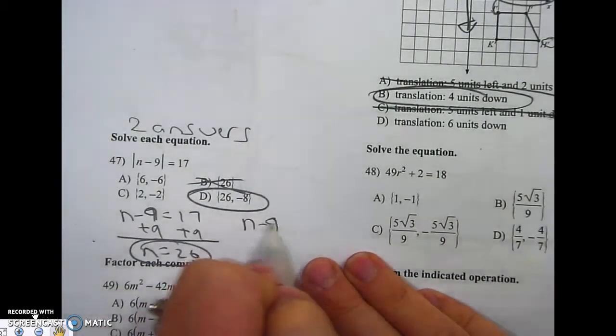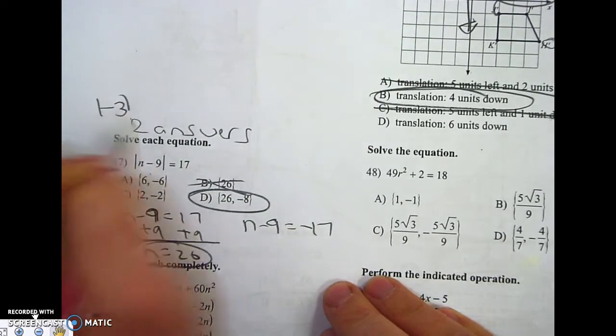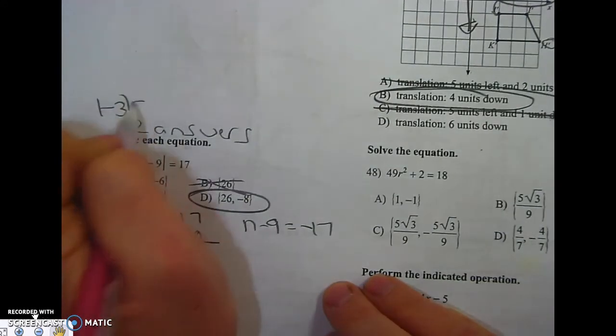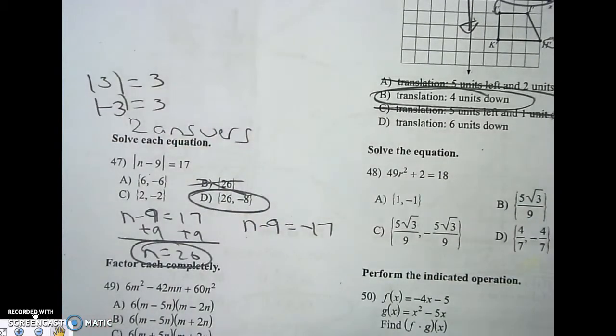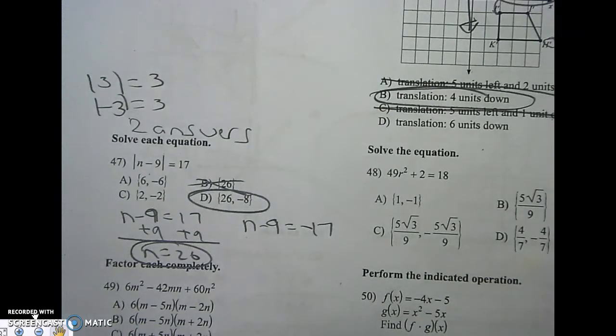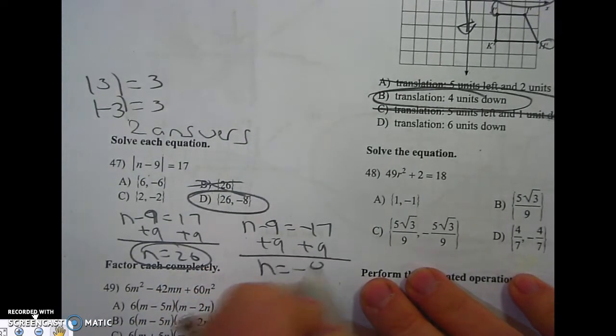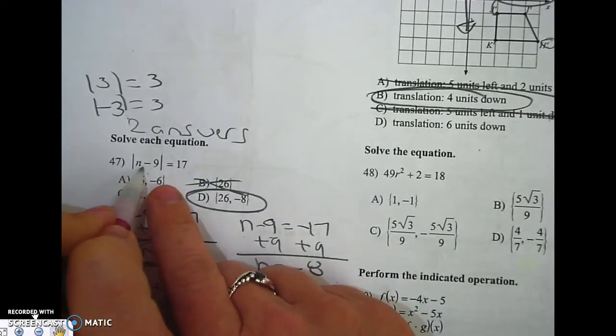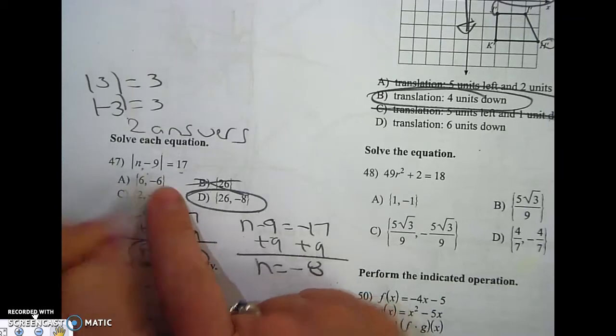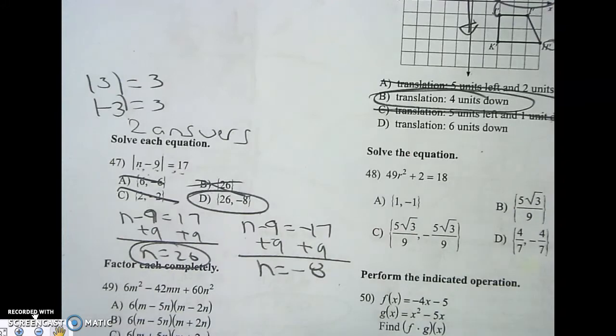N minus 9 equals negative 17. Because remember, when you have the absolute value of a negative number, it turns positive. And if you have the absolute value of a positive number, it's still positive. It's the distance from 0. So plus 9, plus 9, N equals negative 8. I know I'm good to go. If you don't believe me, you could check. 26 minus 9 is 17. That'll never give me 17. 2 minus 9 is 7. That won't give me 17. So it has to be D.